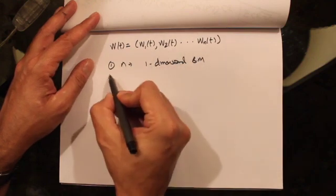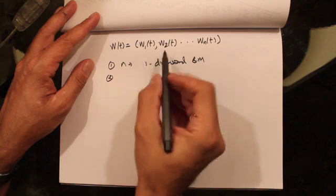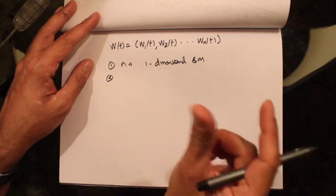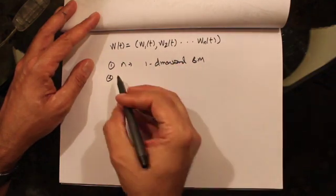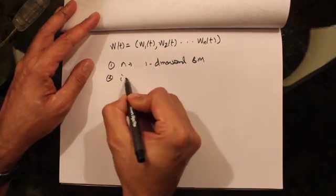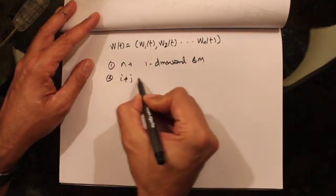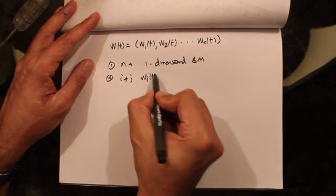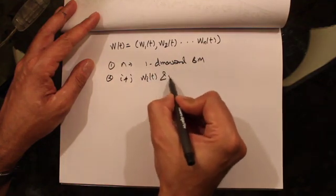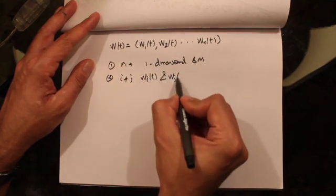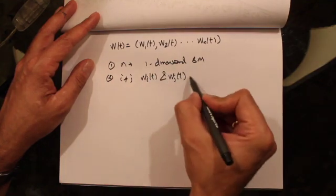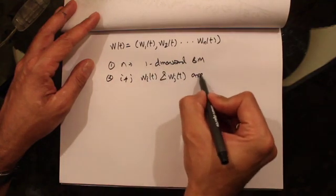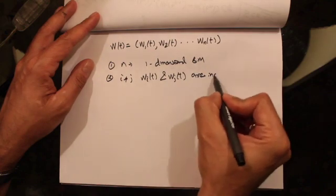All N one-dimensional Brownian motions are independent of one another. So if i is not equal to j, then W_i(t) and W_j(t) are independent.